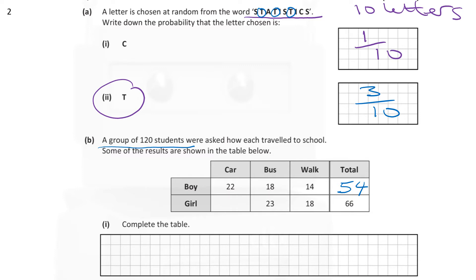So to further complete the table, there's some data missing from the girls. We know that there are 66 girls in total. 18 walked. 23 travelled by bus. So how many went by car? Well, there are 41 went by bus or walked. So therefore, that leaves 15 remaining. 66 minus 41 equals 15. So that's 15 there.